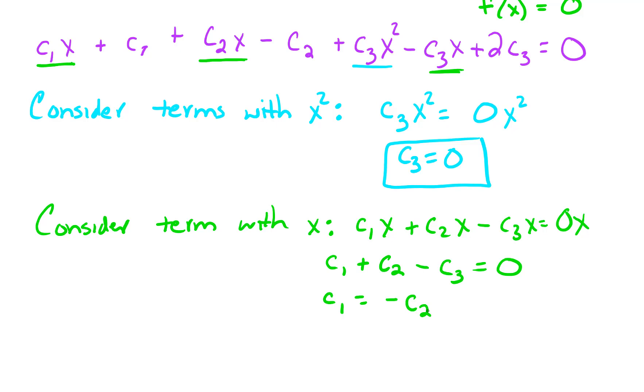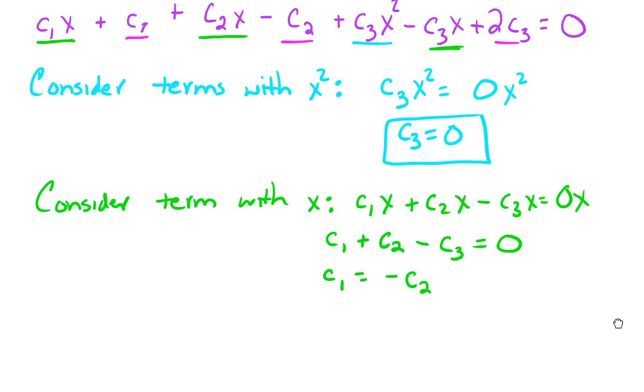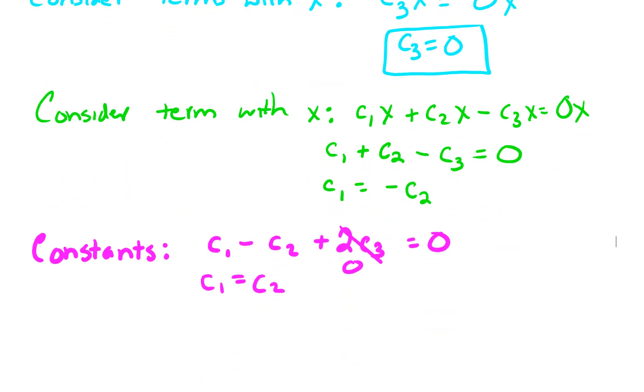Lastly, let's look at our constants. For the constants, we have C1 minus C2 plus 2C3, and we already said that's zero. This implies that C1 equals C2.